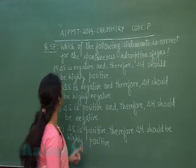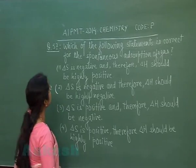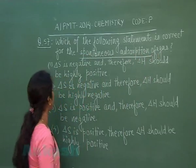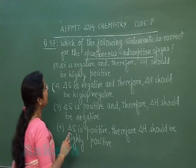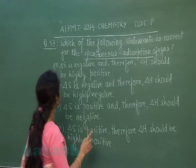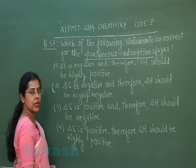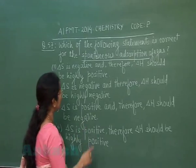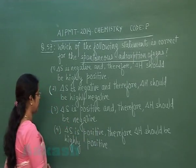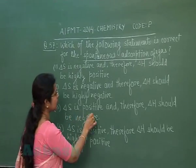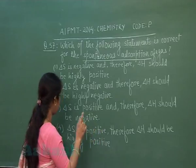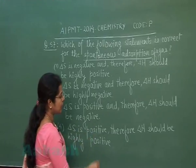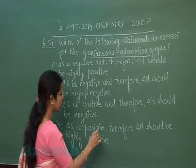Next question is question number 57. Which of the following statements is correct for the spontaneous adsorption of a gas? Option 1: ΔS is negative and therefore ΔH should be highly positive. Option 2: ΔS is negative and therefore ΔH should be highly negative. Option 3: ΔS is positive and therefore ΔH should be highly positive.